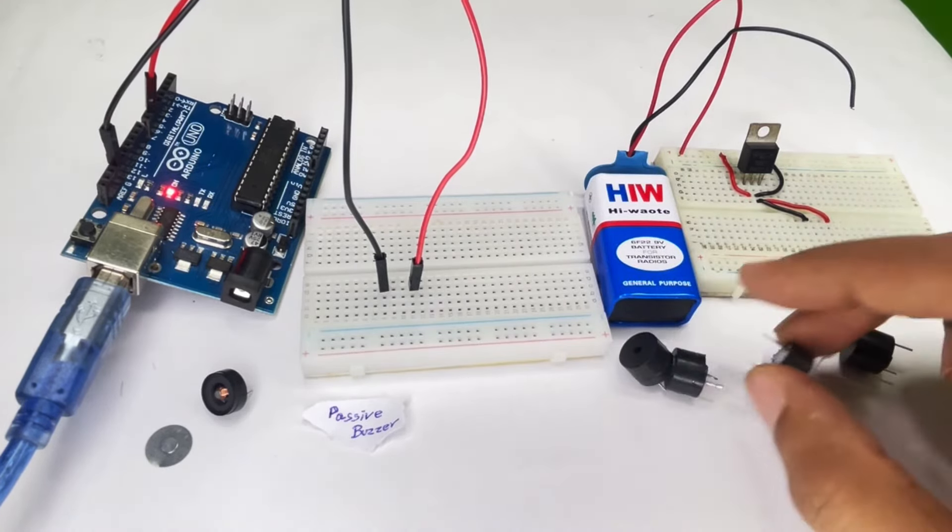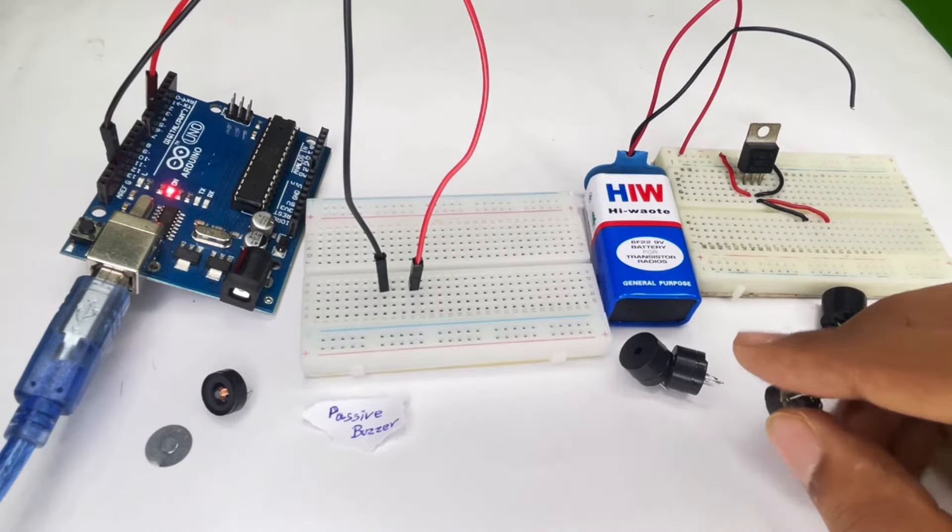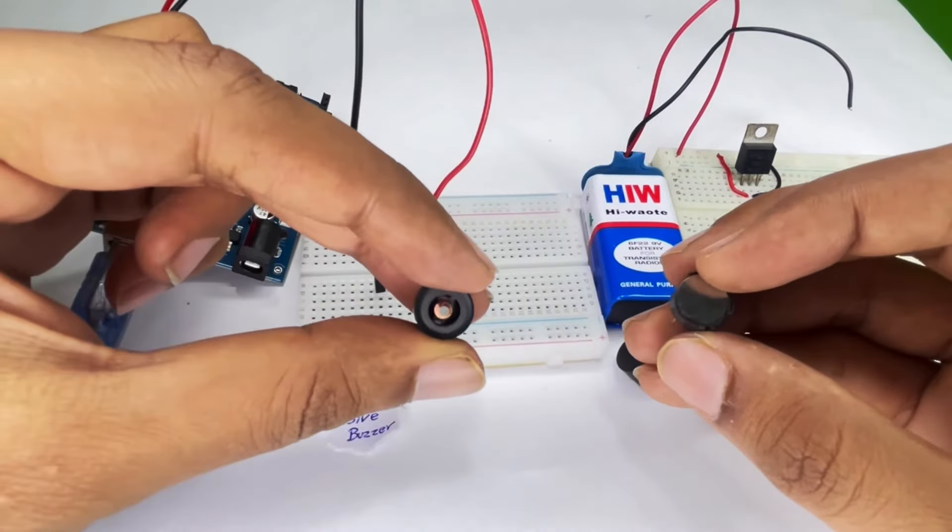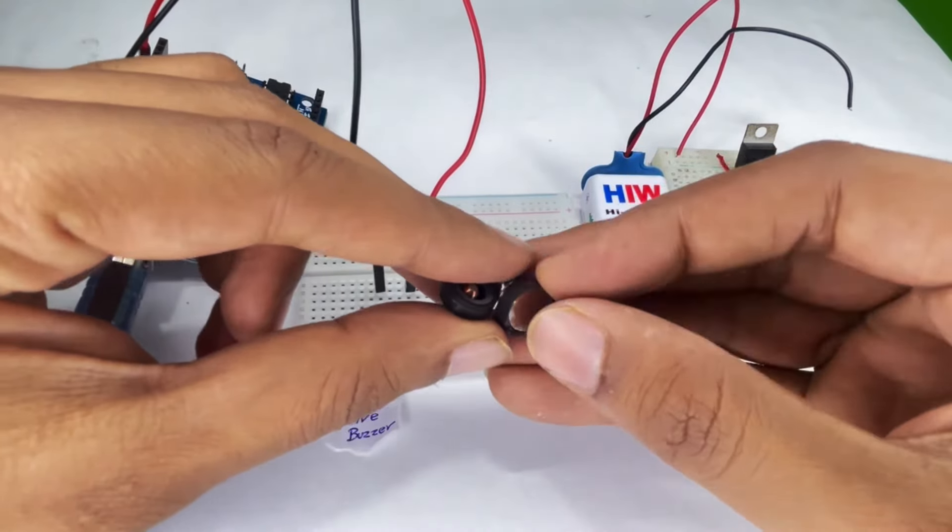So that's it guys, this is how you use an active buzzer and a passive buzzer. Just to make it a bit more interesting, we popped open a passive buzzer and an active buzzer. So this is the vibrating drum.